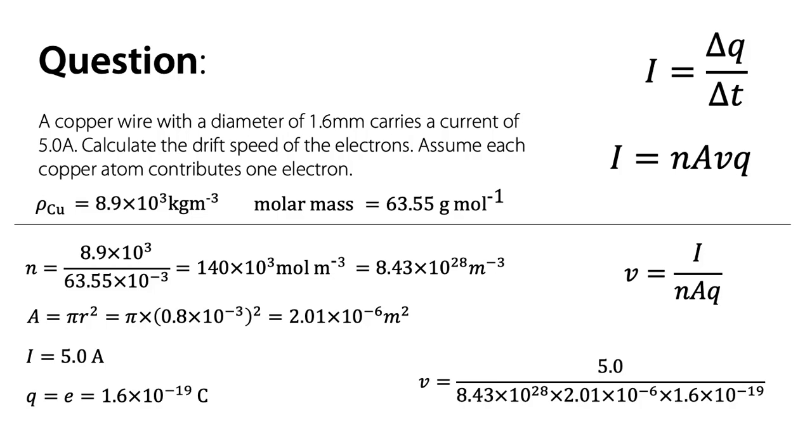Plug the numbers in: 5 over 8.43 × 10²⁸ multiplied by 2.01 × 10⁻⁶ multiplied by 1.6 × 10⁻¹⁹. Those bottom parts all multiply together to give you 27,111, give or take, and 5 divided by that number gives you 0.00018 meters per second, which is 0.18 millimeters per second in more human scale units.